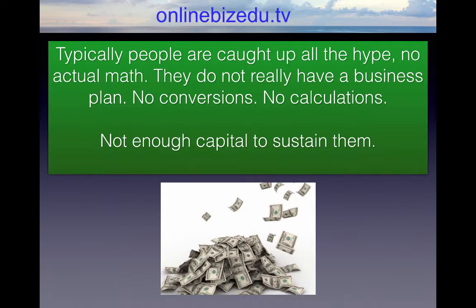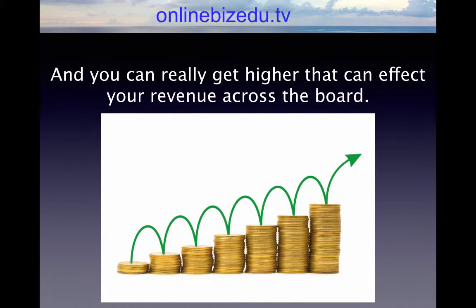They're buying hope really, instead of following an actual proven process and knowing what the math is behind the scenes. Again, all these things can really hurt your conversions in top tier. But if you are able to fix all that or create all that, you can really change that 1% conversion into 3%, and get even higher — which can affect your revenue across the board.